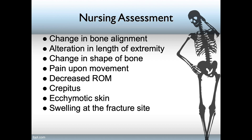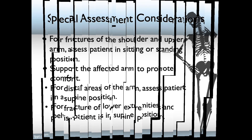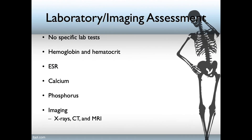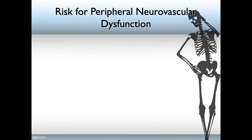Fractures in different areas require special considerations. For shoulder and upper arm fractures, assess the patient in a sitting or standing position and support the affected arm to promote comfort. For distal arm fractures, assess the patient in the supine position. For lower extremity and pelvic fractures, the patient should also be assessed in the supine position. There is no specific lab test to diagnose a fracture; however, hemoglobin, hematocrit, ESR, calcium, and phosphorus should be checked, as they are indicators for conditions like osteoporosis. Imaging — including x-rays, CT, and MRI — is the primary diagnostic tool.